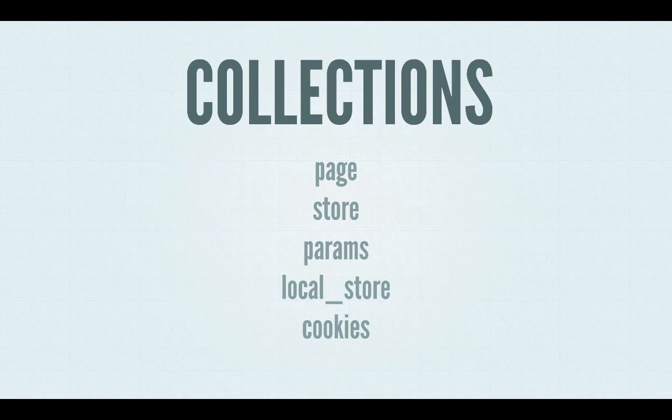Volt provides a series of what we call collections, which are different places to store data that all have the same standard API. For example, page is a temporary collection in memory; store backs from the client to the database on the server side and has some intelligence about running validations and permissions logic on both sides. Params backs to the URL parameters, and you can use routes to map specific parameters into the URL. Local store is the local storage, and cookies is cookies, with some others in the works.